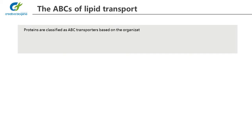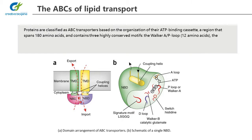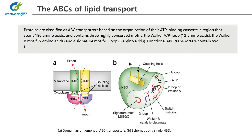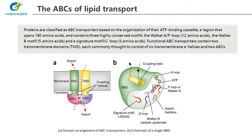Proteins are classified as ABC transporters based on the organization of their ATP binding cassette, a region that spans 180 amino acids, and contains three highly conserved motifs: the Walker-A P-loop, the Walker-B motif and a signature motif-C loop. Functional ABC transporters contain two transmembrane domains, each commonly thought to consist of six transmembrane alpha helices and two ABCs.